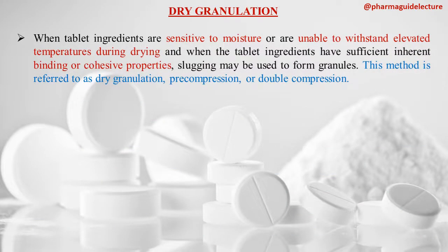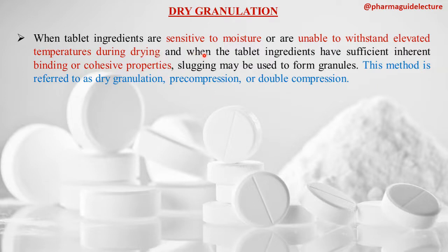There are three conditions when the dry granulation method is used. First, when the tablet ingredients are sensitive to moisture. Second, when the drugs or ingredients are unable to withstand elevated temperature during drying — they may get destroyed at elevated temperatures. Third, when the ingredients have sufficient inherent cohesive or binding properties, or sufficient directly compressible properties.